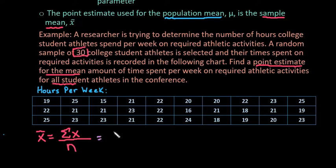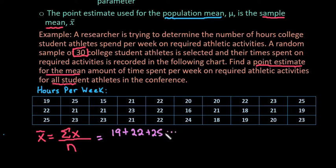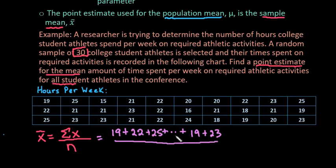If you wanted to do this by hand, you would start somewhere in the chart and go down each column — so starting with 19, then 22, then 25, continuing in this pattern adding all the values. You can use ellipsis notation to indicate all the values in between, and then divide by 30.